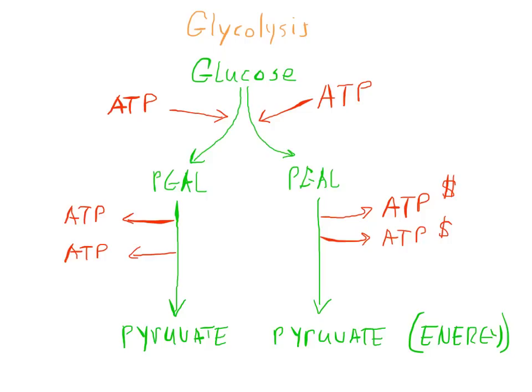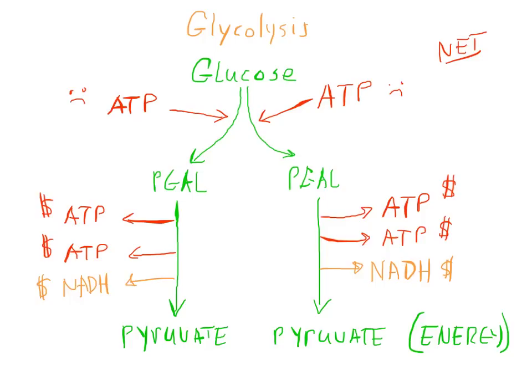The chemical reactions also produce another energy-carrying molecule called NADH. It's very similar to the NADPH that we discussed in the photosynthesis process, and this is also energy storage, so we'll add the money sign. Since two ATP were used to get things started in the beginning, we have a net ATP production of 2 ATP.